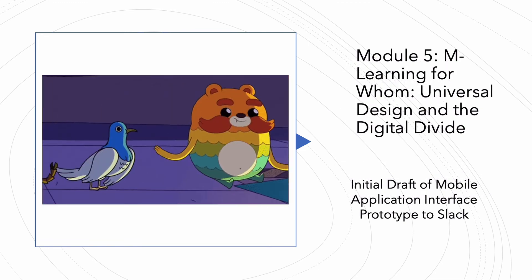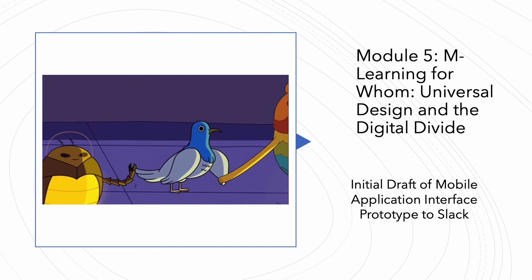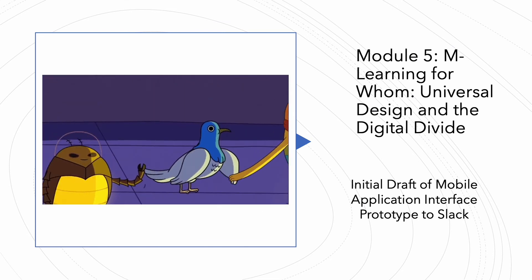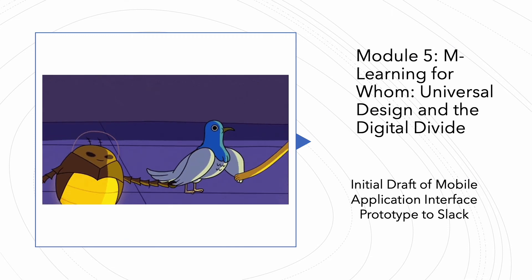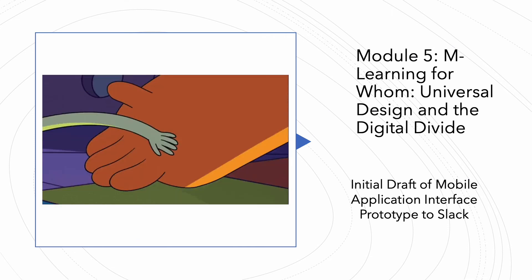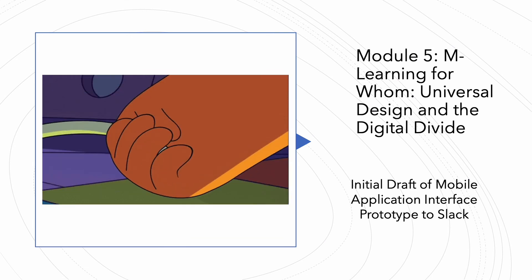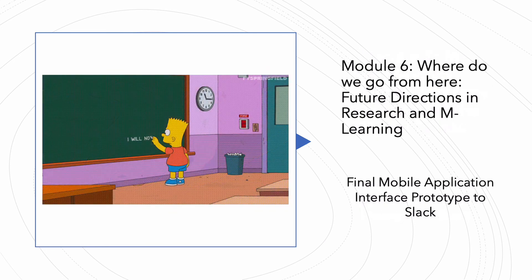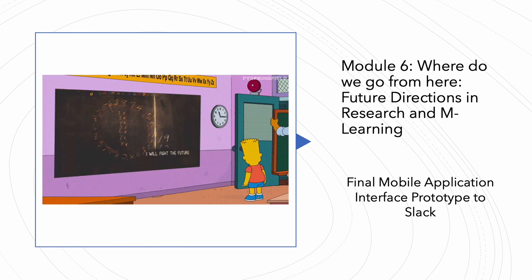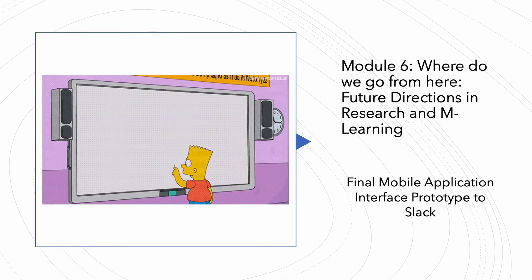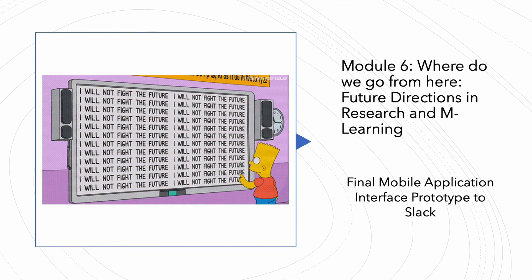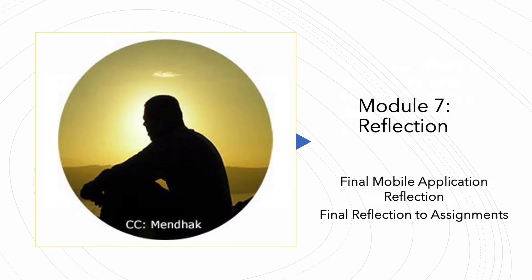In module five, we'll look at some concepts of universal design and also the digital divide. In this module, you'll do an initial draft of your mobile application in Adobe XD — it'll be a wireframe sort of thing with about five screens done, but it will not be the complete application. That will come in module six, where we'll talk about some future directions and research in mobile learning, and you'll submit your final application. In the last module, through the last day of class, I'll ask you to do a reflection on your mobile application and also an overall reflection on the entire class.